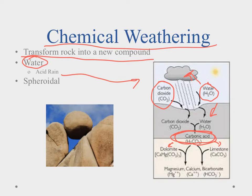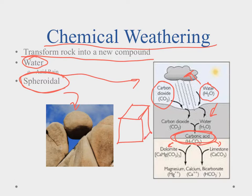Another type of chemical weathering is spheroidal weathering. If you take a cube of rock and expose it to the elements, the edges erode quicker. If you erode away all the edges, what you end up with is that spheroid-type rock. The lesson will go into these in more detail — this is just an overview.